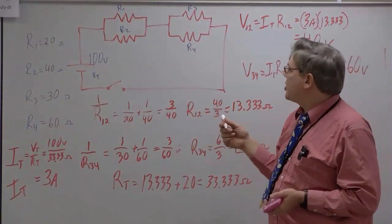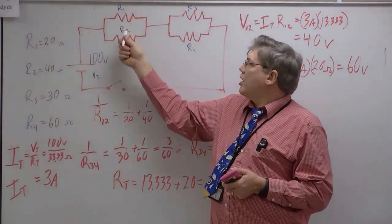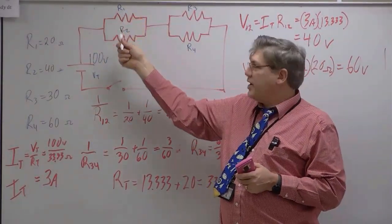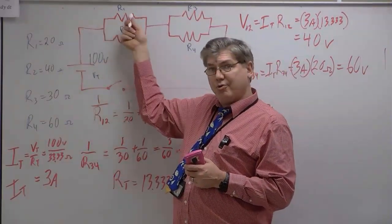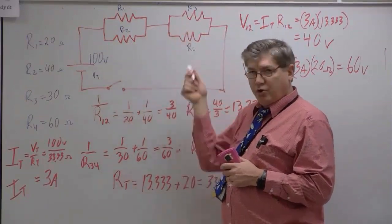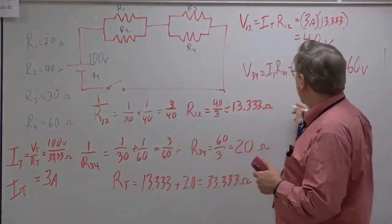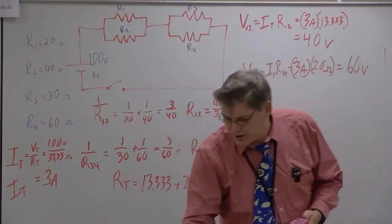Since we know the voltage drop and the resistance, we can also calculate the current for R1 and R2. We know that the current for R1 and for R2 together have to add up to 3 amps, because all of the current has to go either through R1 or R2 before it comes back together again. The same will be true of 3 and 4, but let's go on and get those anyway. I'm going to switch colors here.